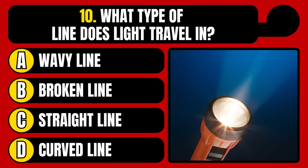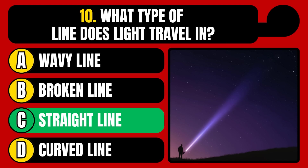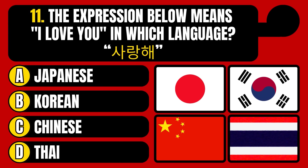What type of line does light travel in? Wavy line, broken line, straight line, or curved line? The correct answer is option C, straight line.